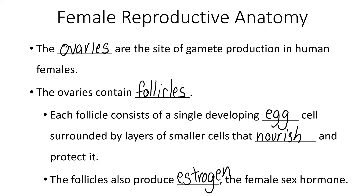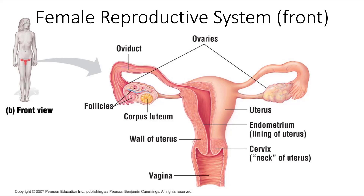Here we see an image of the female reproductive system from the front. We see the paired ovaries on either side with oviducts, also called fallopian tubes, leading towards the uterus. The uterus is the central structure — a pear-shaped structure composed of smooth muscle — with endometrium lining the inside of the uterus. The narrow neck of the uterus is known as the cervix, and this is directly adjacent to the vagina.